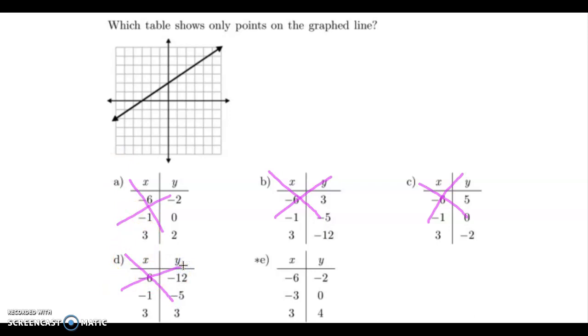So let's finally look at E, because it looks like E is the right answer. But let's make sure those points are on the line. First one says negative 6, negative 2. Start at 0, 0. Negative 6 means I move to the left 6: 1, 2, 3, 4, 5, 6. Negative 2 means I move down 2: 1, 2. Beautiful, that point is right on that line. I'm going to make it nice and big so you can see it.